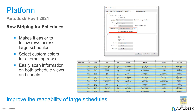Revit 2021 allows you to not only stripe the rows in your schedules, but also change the coloring. The original Revit 2020 striping was just gray. Now you can change it to different colors, making it easier to read. You can specify this under the appearance tab of the schedule properties for striping and coloring.